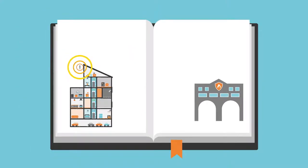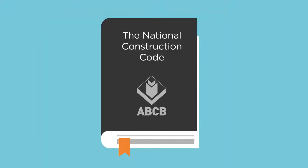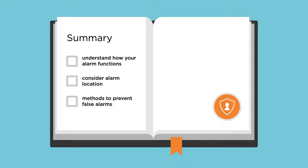Many smoke detection systems in apartment buildings are connected to a fire station dispatch center, above the minimum requirements of the NCC. A fire alarm monitoring system, for example, a smoke detection system connected to a fire station dispatch center, is not required for most apartment buildings. For the most part, false alarms can be attributed to occupant behavior. Understanding how your alarm functions, considering alarm location and methods to prevent false alarms, can significantly reduce the incidence of false alarms and increase the safety of occupants.